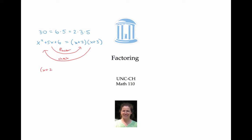If I distribute x plus two times x plus three, then I multiply x by x, that gives me x squared; x times three gives me three x; two times x gives me two x; and two times three gives me six. So that simplifies to x squared plus five x plus six, which checks out with what I started with. You can always check your factoring by distributing or multiplying out.